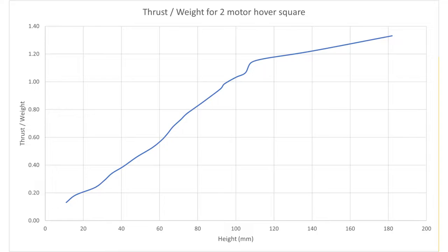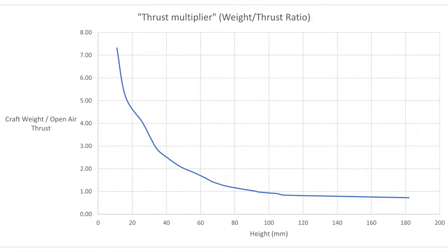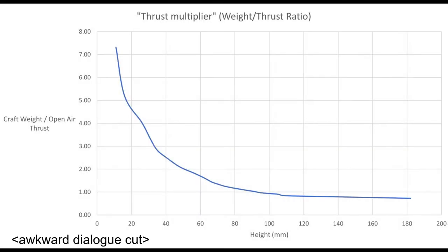Something else I did: I did the weight of the craft divided by the open air thrust for each data point. This looks like this. You could also call this strength of ground effect, but I'm calling it a thrust multiplier. Looking at 35 millimeters, it's producing about 450 grams of open air thrust and the thing weighs 1250 grams. So it's as if that thrust has been multiplied about 2.8 times. Those motors are only producing about a third of the thing's weight in the open air, yet hovering on the spot the total upward force must be equal to the weight. I wanted to call it coefficient of thrust, but that's probably an already used term. So I'm calling it thrust multiplier just now.